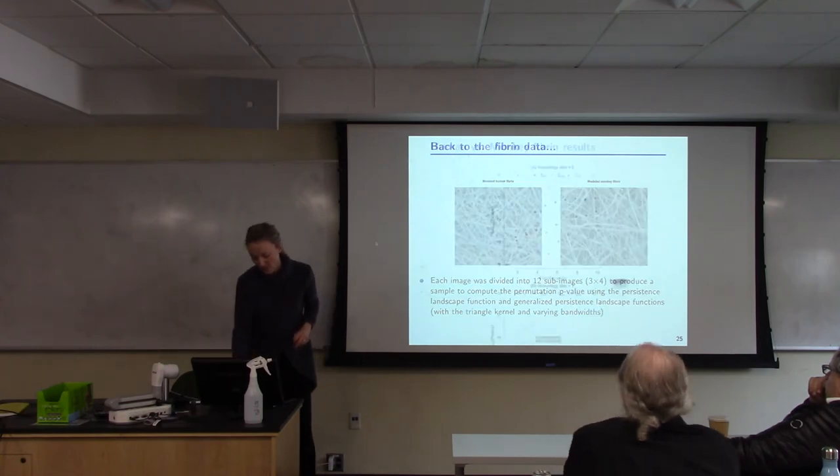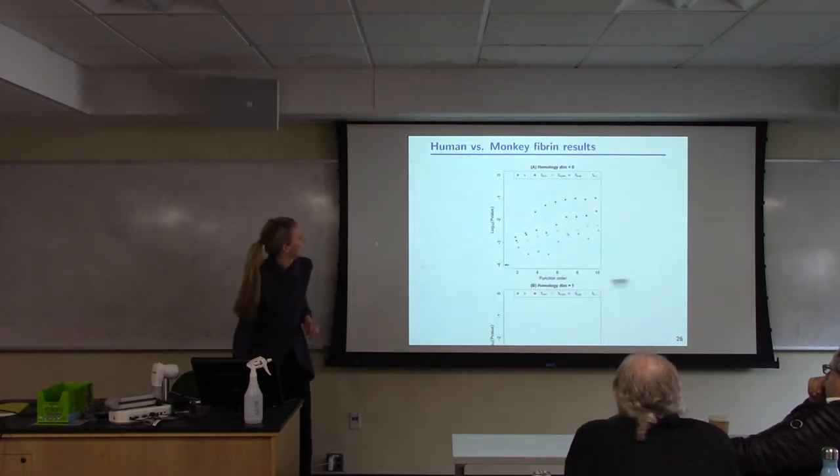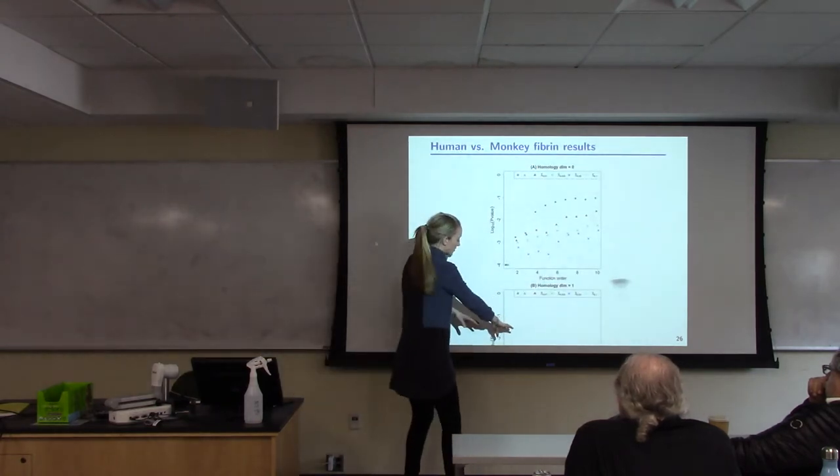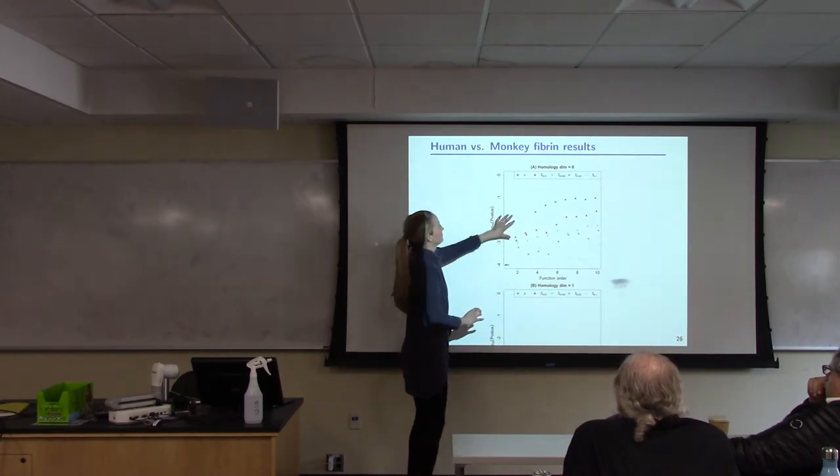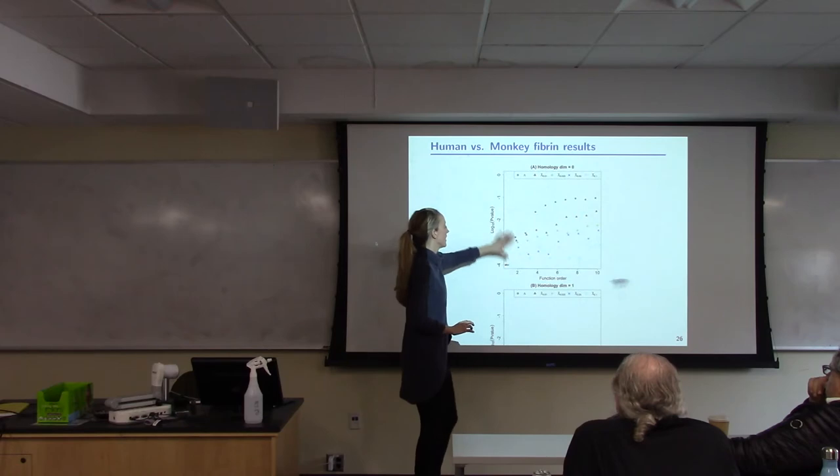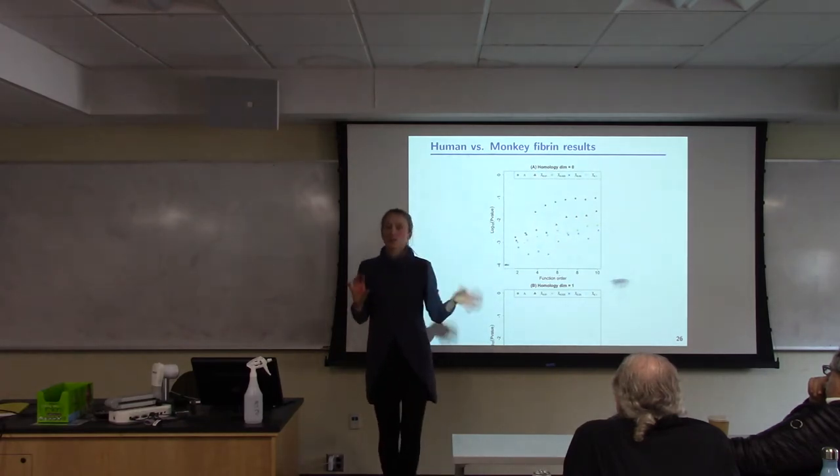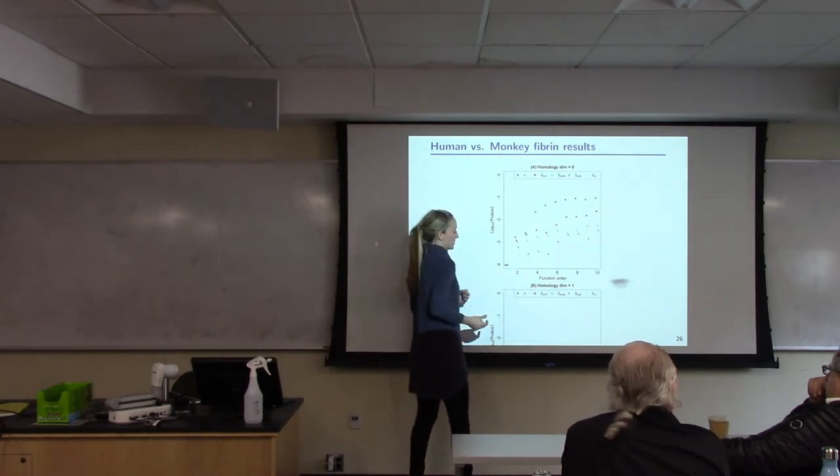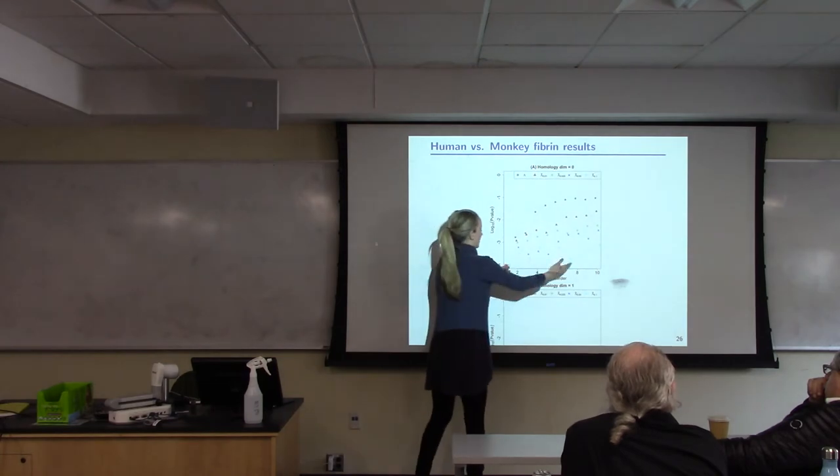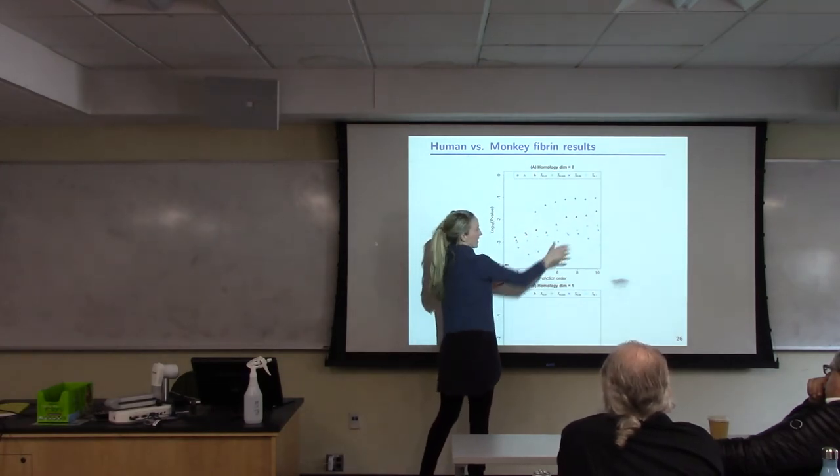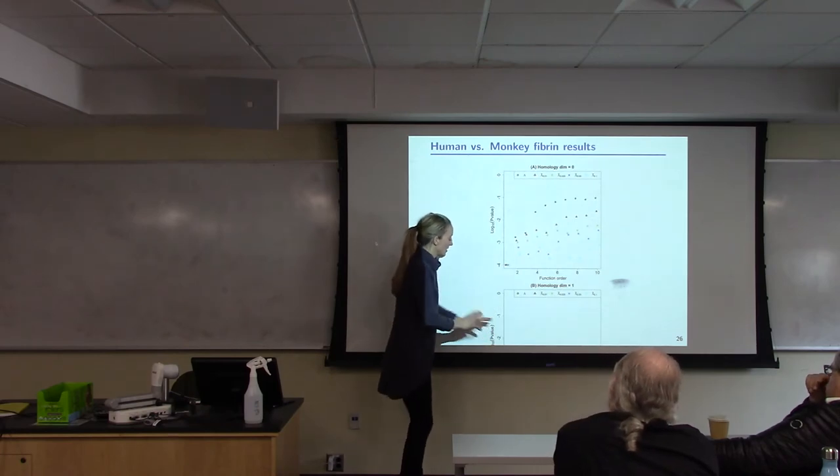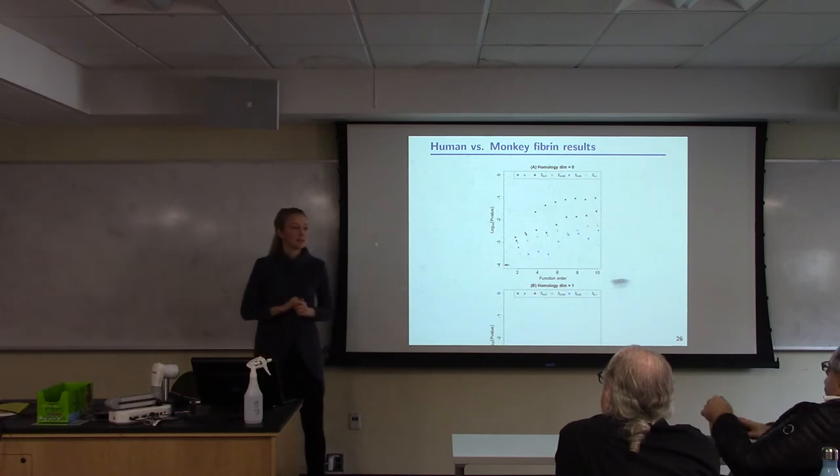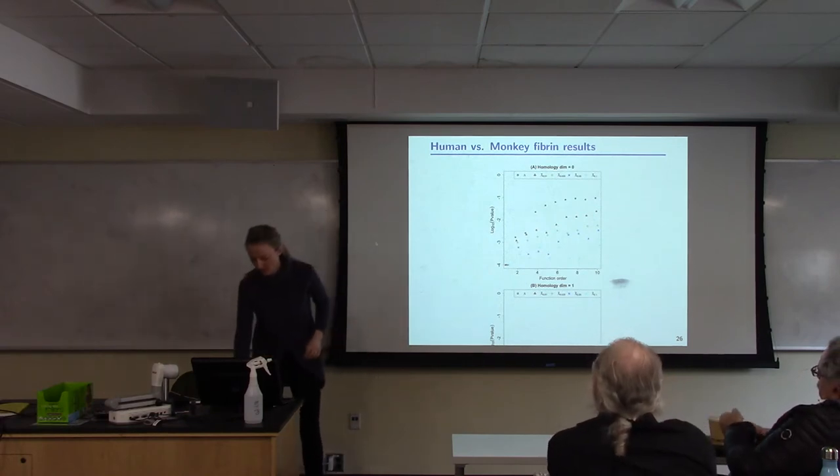We also considered other tasks that I'm not displaying here, some that were just specific comparisons of persistence diagrams rather than the functional summaries, and that direct comparison action didn't do that well. But, yeah, so it seemed to perform well. Of course, with the generalized landscape function, you have a tuning parameter, so in some ways it's expected that it would do better. But, okay, so then we considered this with the fibrin data. Oh, boy. Yeah. I must have the wrong sizing here. But that's okay. These were basically all very close to the negative four.